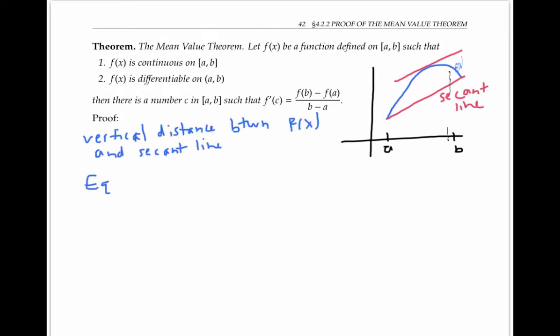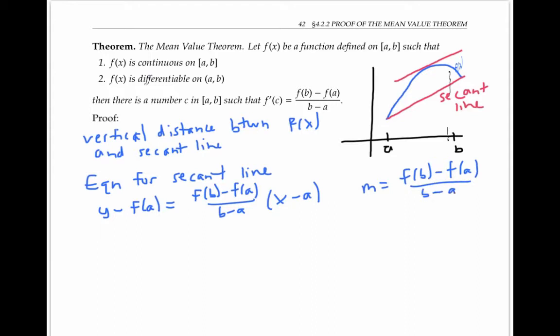First, an equation for the secant line is given by y minus f(a) is equal to [f(b) - f(a)] / [b - a] times (x - a). That's because the slope of the secant line is [f(b) - f(a)] / [b - a], and a point on the secant line is the point (a, f(a)). So this equation is just the point-slope form of a line with the slope through that point. We can rewrite this equation for the secant line by solving for y.